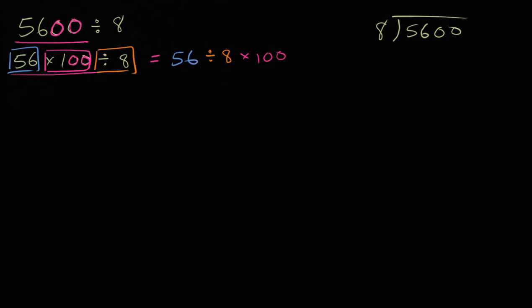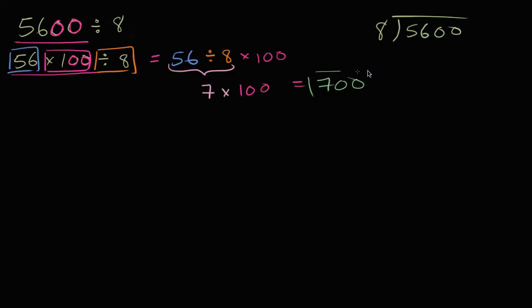8 times 7 is 56, so 56 divided by 8 is going to be 7. And so then you're just left with figuring out what 7 times 100 is — that's going to be 7 hundreds, or 700. And you're done.